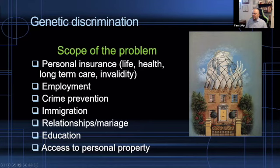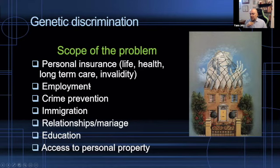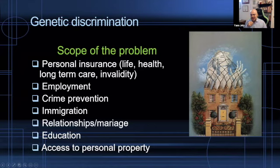There are many reasons why employers would like to have genetic information about future or current employees — not all of them are bad. Sometimes they might actually want that information in order, for example, to protect employees from environmental exposure and the damage it could do to their epigenome. Employers may want to use screening tests, so not all of this is necessarily to discriminate. Crime prevention has also been mentioned.